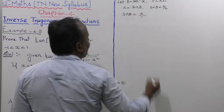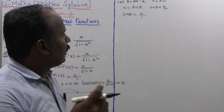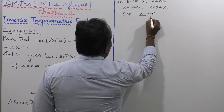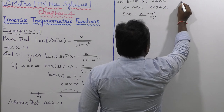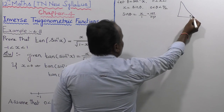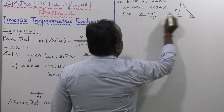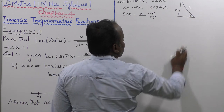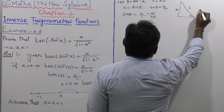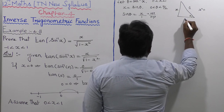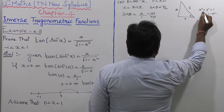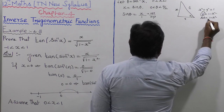Since sin theta equals x, we consider sin theta as opposite side divided by hypotenuse. Taking a right angle triangle with angle theta, opposite side is x and hypotenuse is 1. By the Pythagorean theorem, x squared plus adjacent squared equals 1 squared. So adjacent squared equals 1 minus x squared, giving adjacent side equal to root of 1 minus x squared.